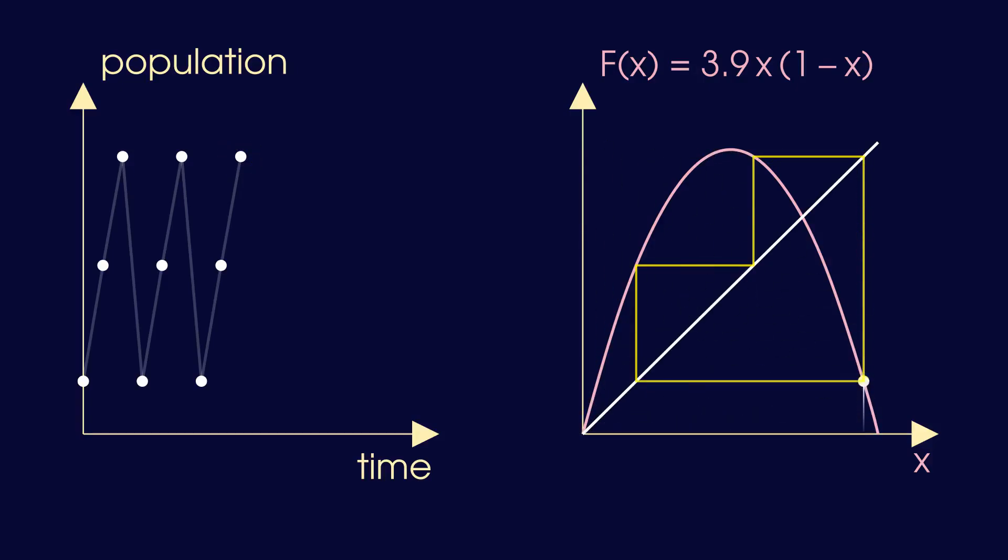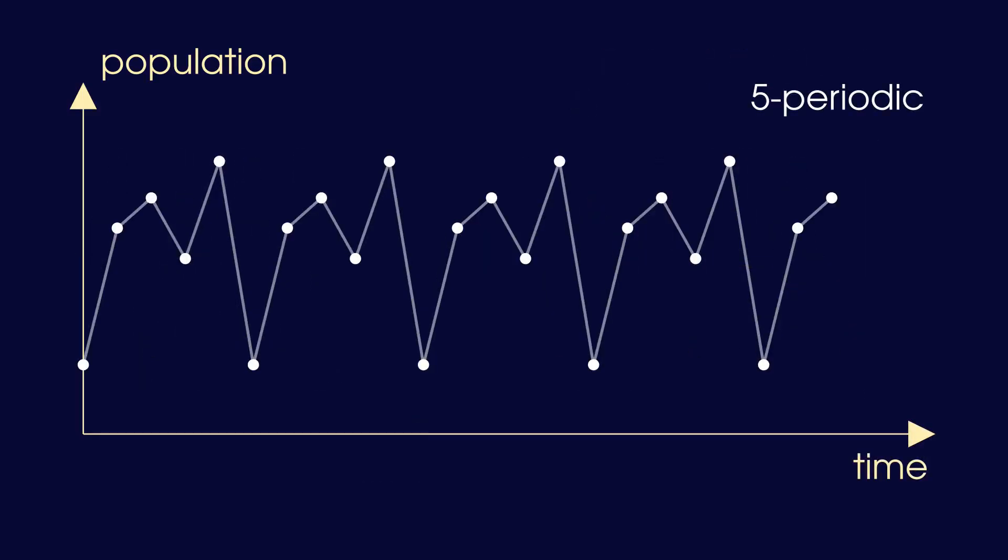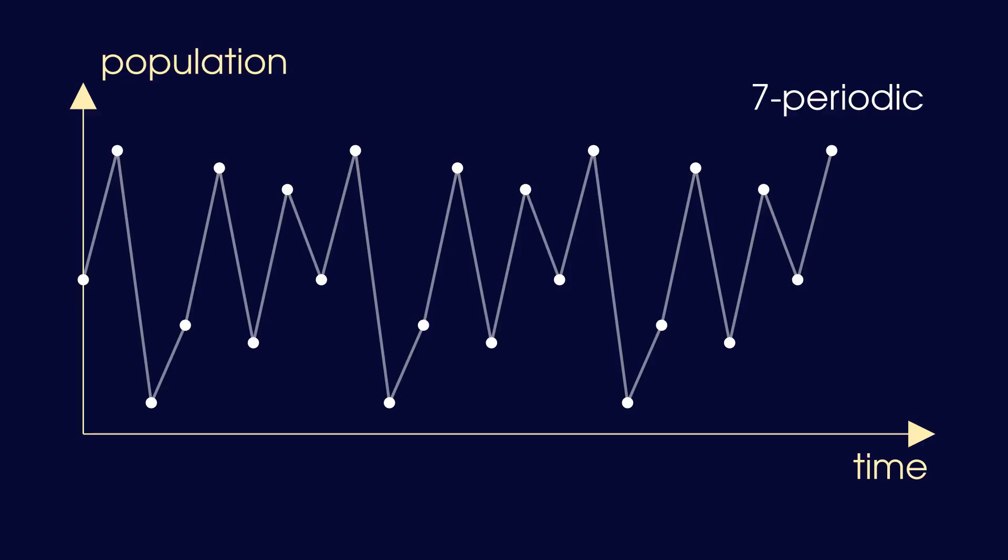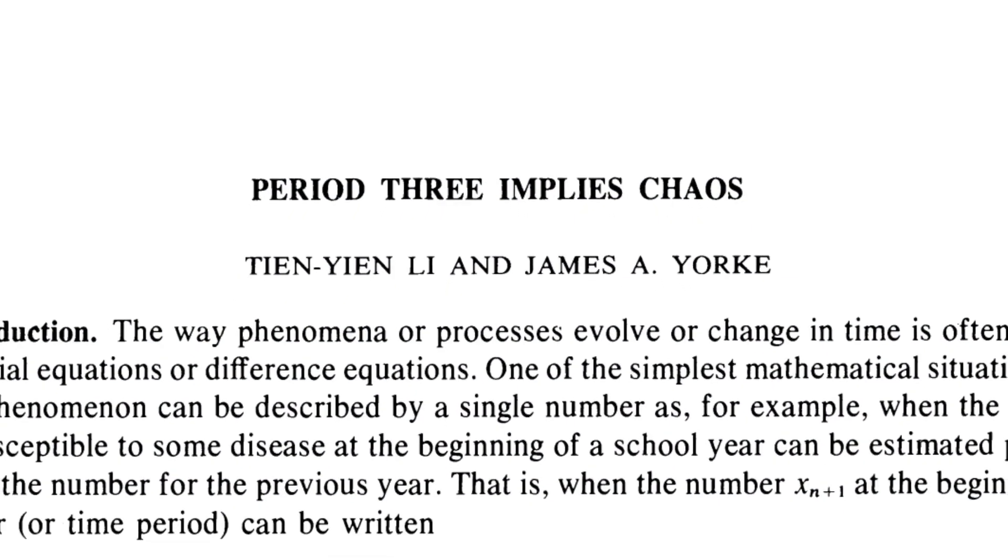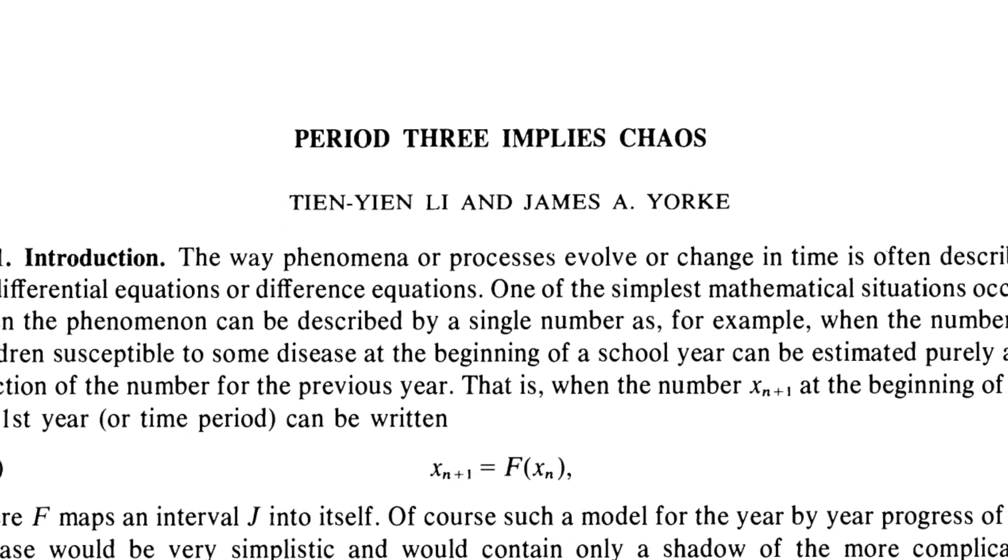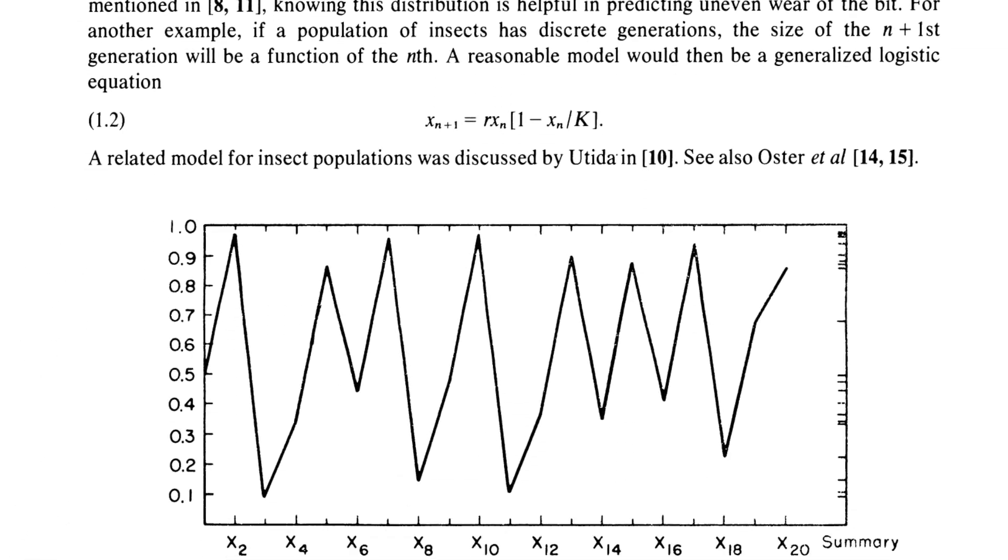The existence of this 3-periodic solution has a remarkable implication. It implies that solutions exist with any given period. This property is the meaning of the title of a famous 1975 paper by Lee and York, Period 3 implies chaos. This paper is often credited with popularizing chaos as a mathematical concept.